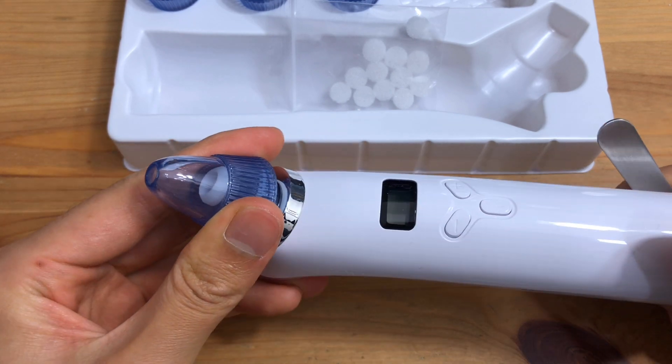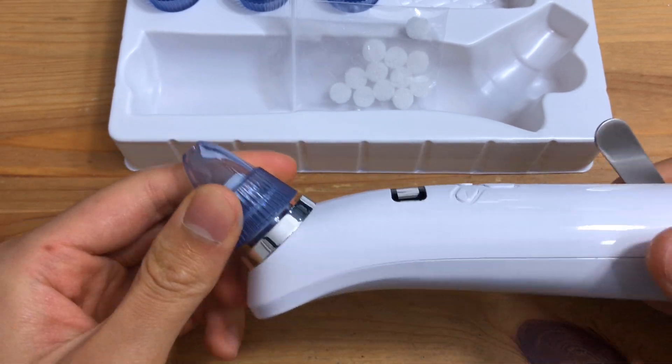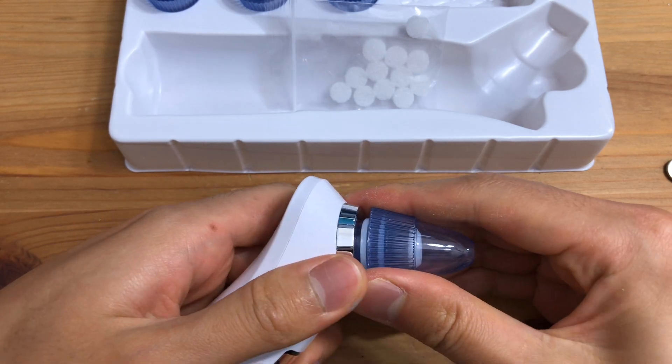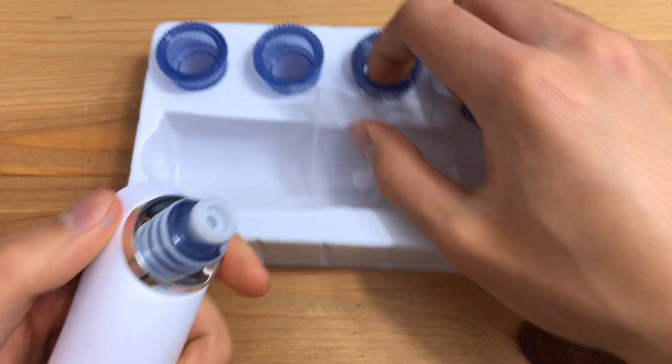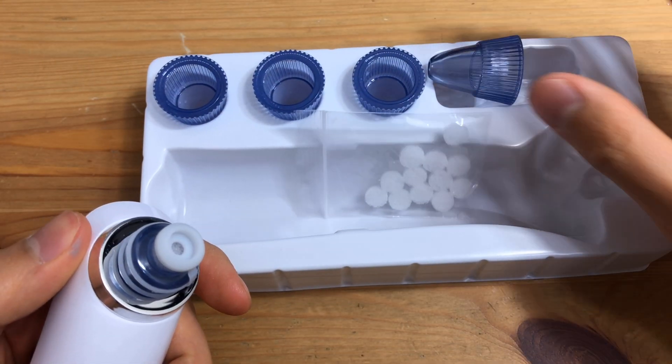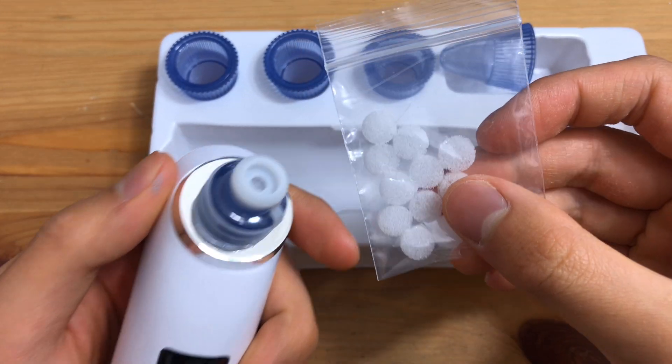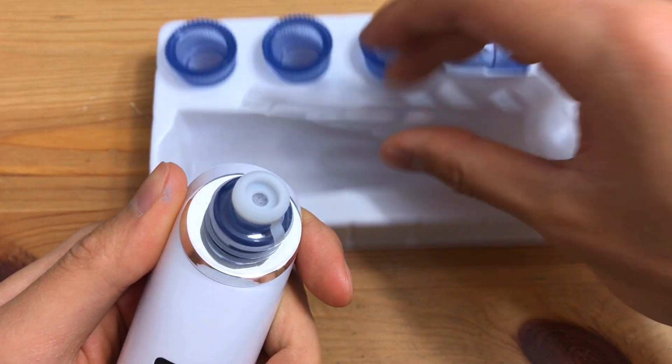It was about 20 bucks on Amazon and it's got all these interchangeable tips that simply press onto these O-rings. There's four of them. It comes with them. One of them is pre-installed and it has all these little filters that you can swap onto the end.